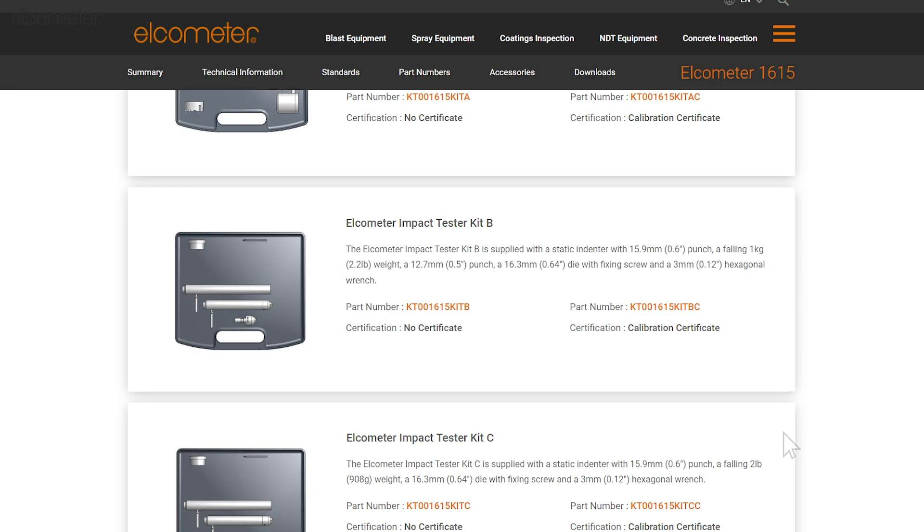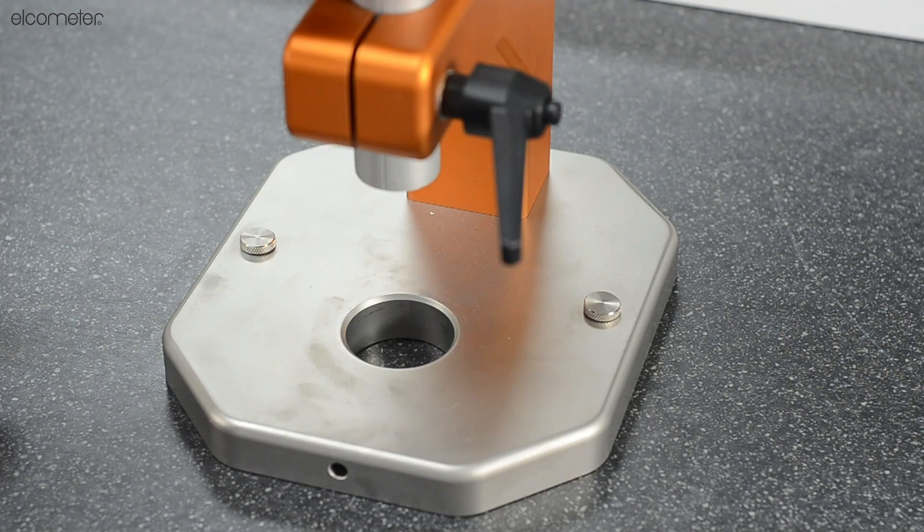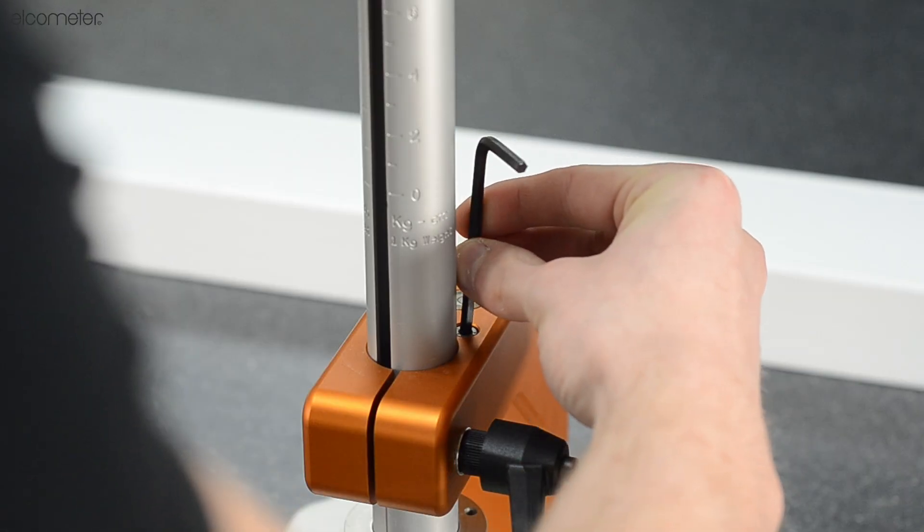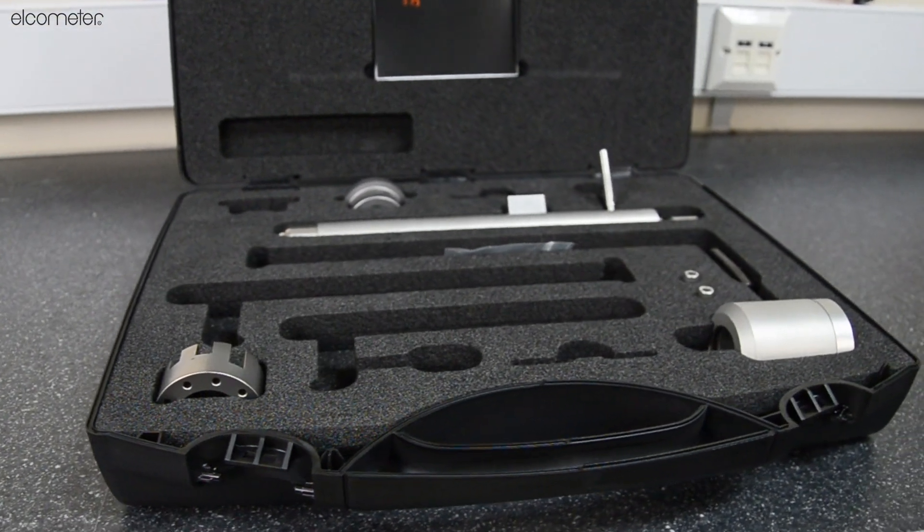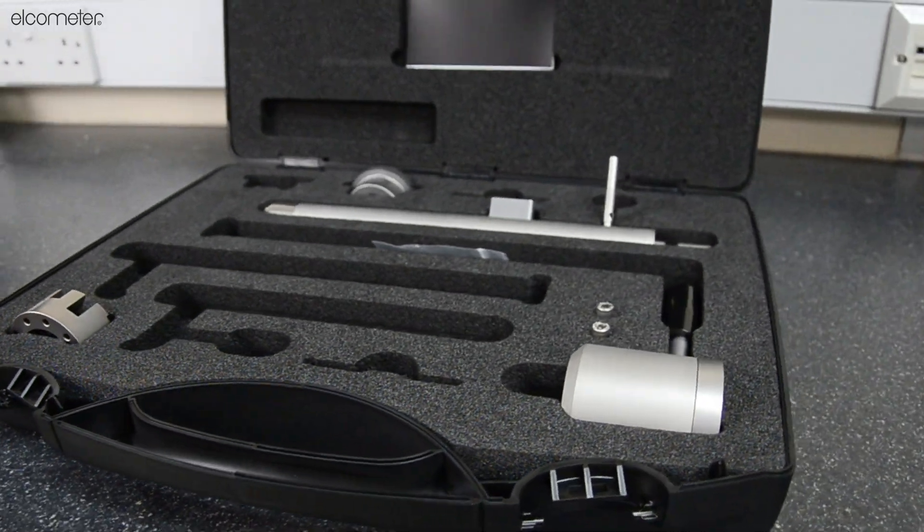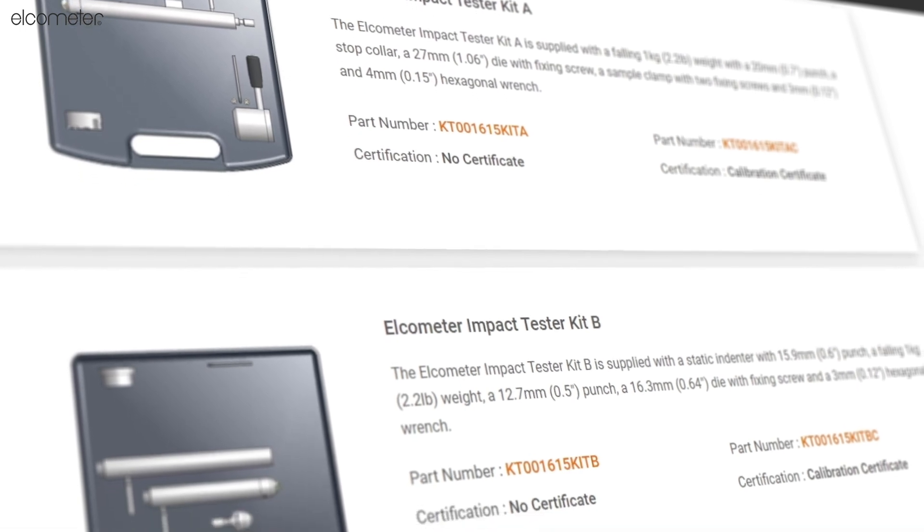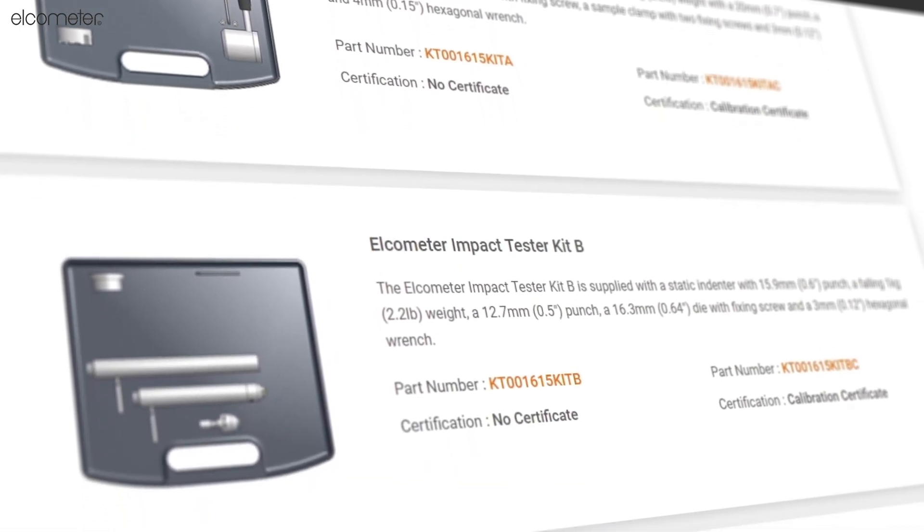Simply choose the most appropriate kit for your application, then attach the punch, die, and accessories to the base unit. For full details of the contents of each individual kit and the standards they conform to, visit www.elcometer.com.